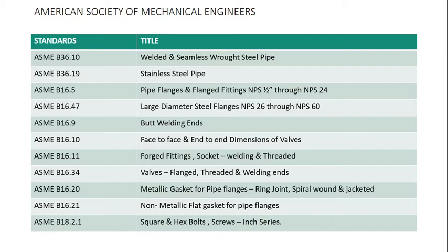B36.10 is for carbon steel pipe; B36.1 is for stainless steel pipe. B16.5 covers flanges from half inch to 24 inch. B16.47 covers large flanges from 26 inch to 60 inch.